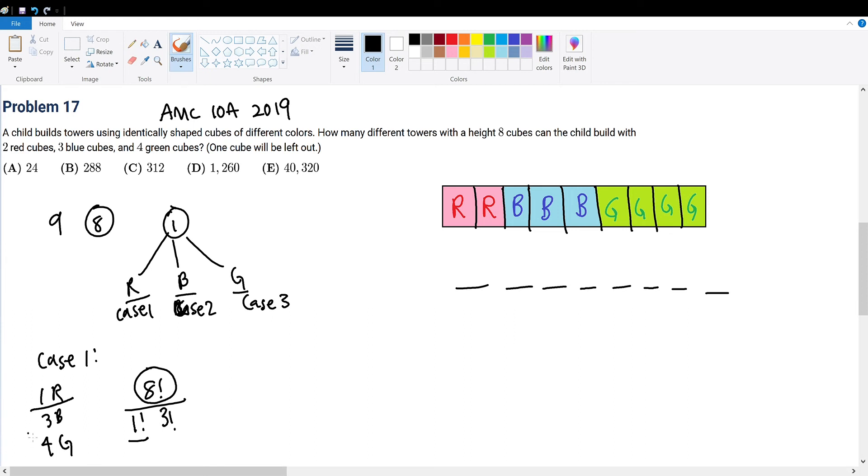This will become apparent when we multiply by 3 factorial, the possible slots that blue can take. But why multiply in this case? This blue block can fill the position of this other blue block, but this rearrangement will not affect the uniqueness of this outcome. The outcome is still in this format.